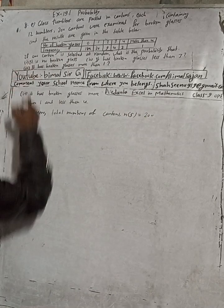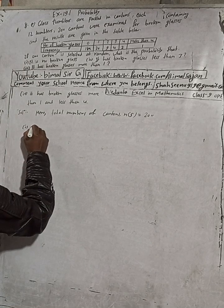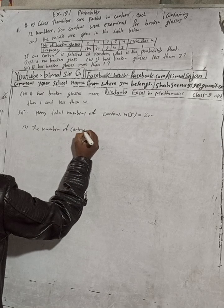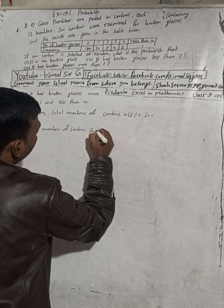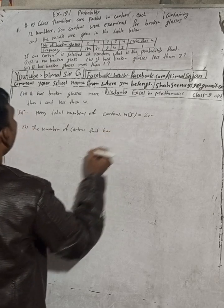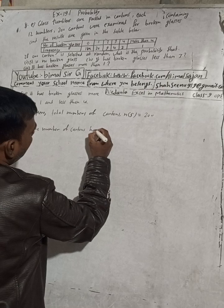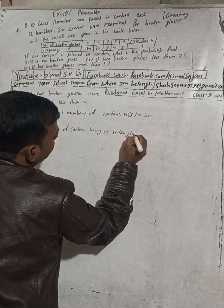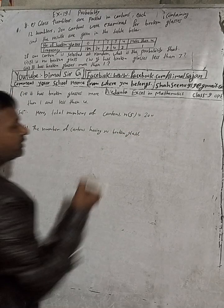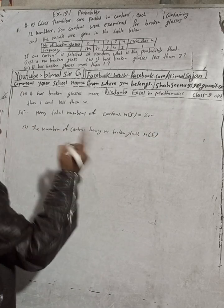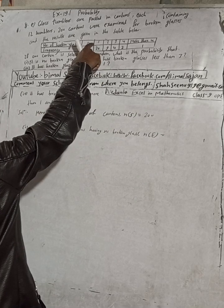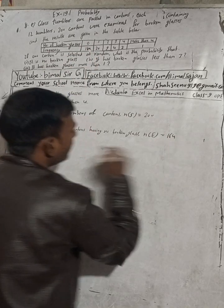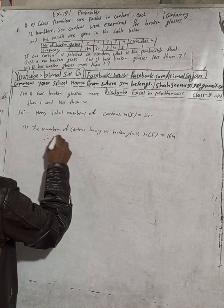Part one: Find the number of cartons having no broken glass. No broken glass means broken glass count = 0. From the table, the number of cartons having no broken glass — n(E) — is 164 cartons.